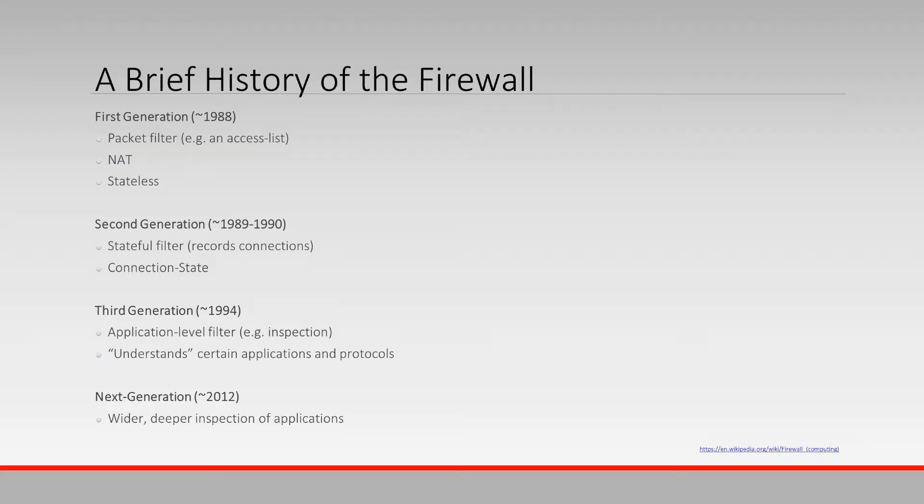Back in the day, the first firewall was really just NAT with access rules. NAT is just network address translation — the ability to translate a private address to a public address — and associate a very simple access list rule that says what IP address you're coming from, what IP address you're coming to, and what protocol and port. And that was about it for the first firewall until the second generation firewall came out.